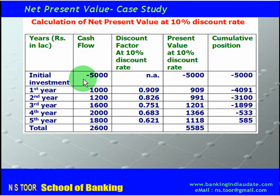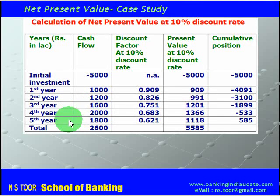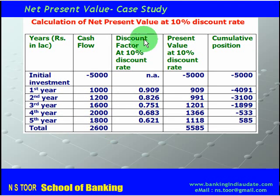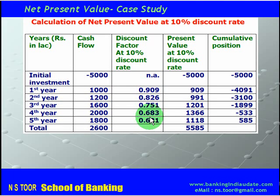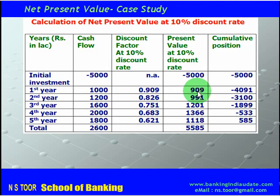We have an initial investment shown as a cash outflow (negative). Then we have first year return, second year, third year, fourth year, and fifth year returns. The discount factors at 10% are obtained from discount value tables. Cash flow multiplied by the discount factor gives us the present value. For a cash inflow of 1000 in year one, the present value is 909 rupees.